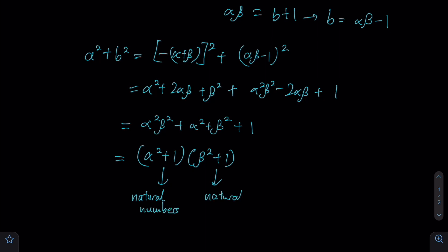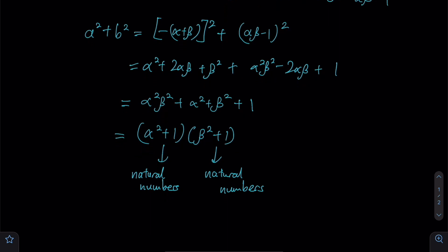Since these two factors are considered natural numbers, you have shown that a² + b² can be expressed as a product of two positive integers, aka natural numbers. Hence this question is complete. We have successfully proven what they want us to do.